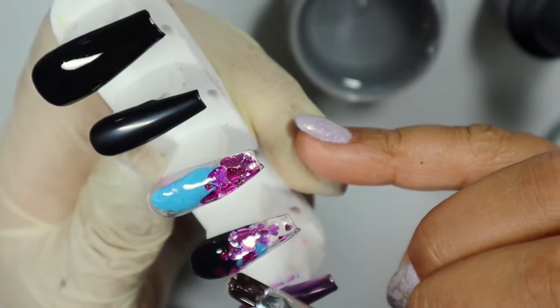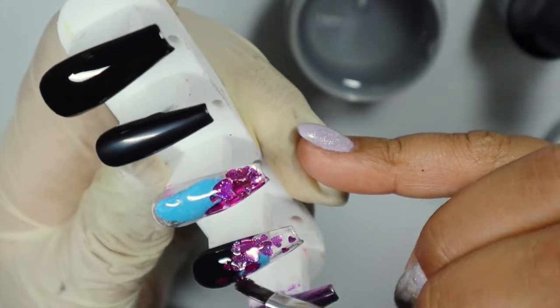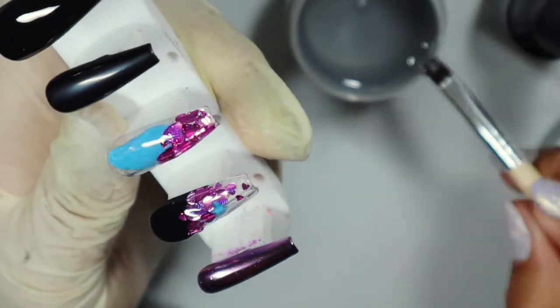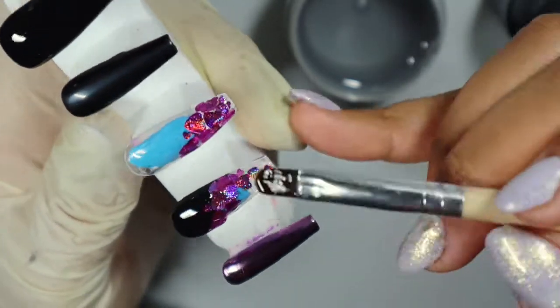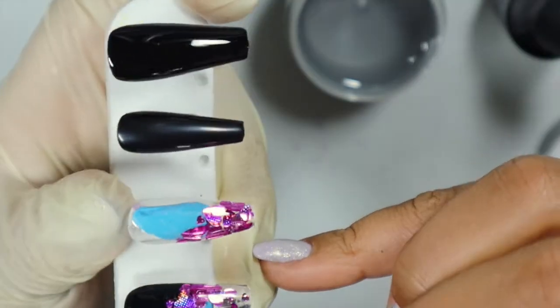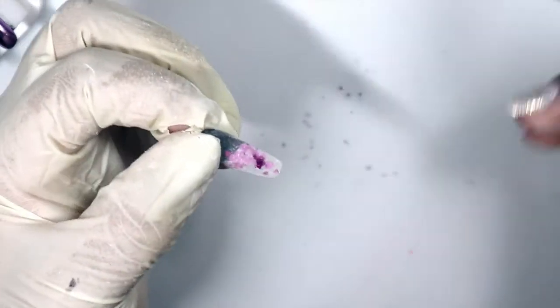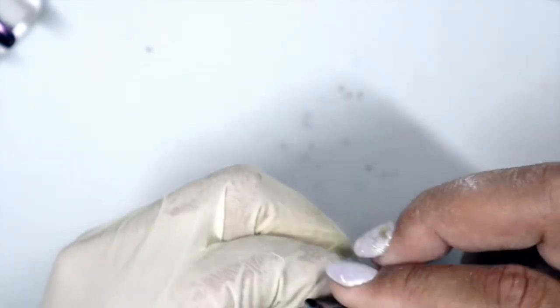So this FLEX gel cures for 60 seconds in an LED lamp. I have the Young Nails LED lamp, so it cures for 60 seconds and it does cure with a sticky layer. So you're going to want to wipe that down before you go into file after it comes out of the light. So I did most of my filing off camera. You're just going to see me just buffing here just to make sure that it's got a nice surface for top coat.